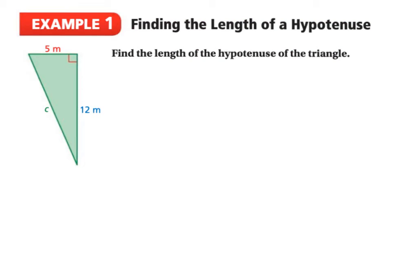Let's take a look at our first example. We want to find the length of the hypotenuse of the triangle. The hypotenuse is this C here, which is directly across from this right angle. Our first step is to write down the formula: A squared plus B squared is equal to C squared. We have to make sure our C is always the hypotenuse, and since it's what's missing, we'll keep it as C squared.